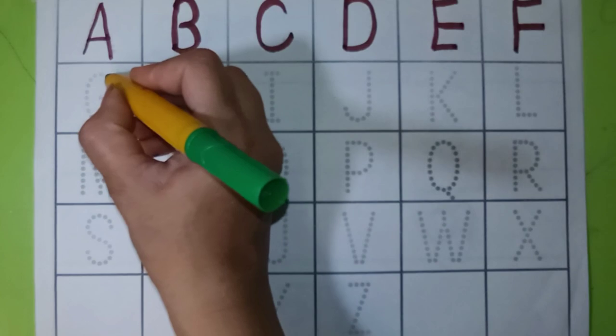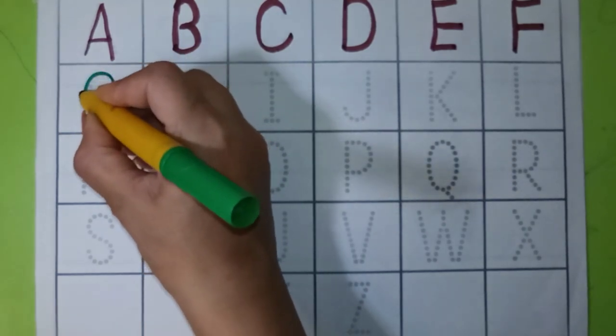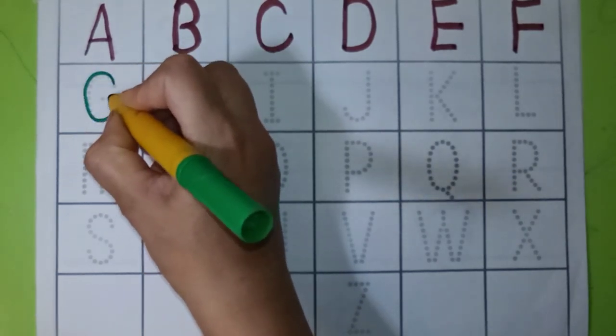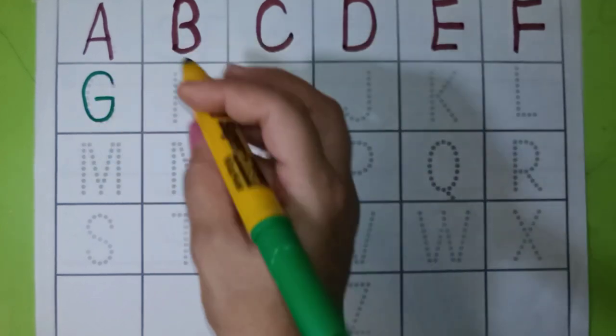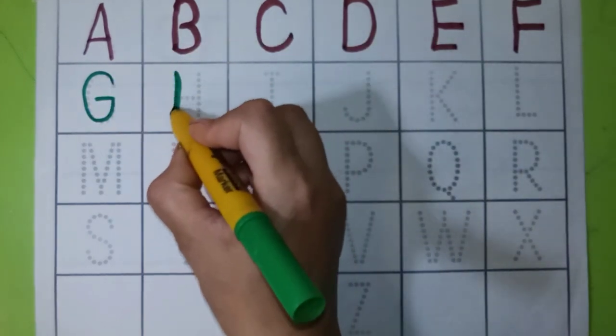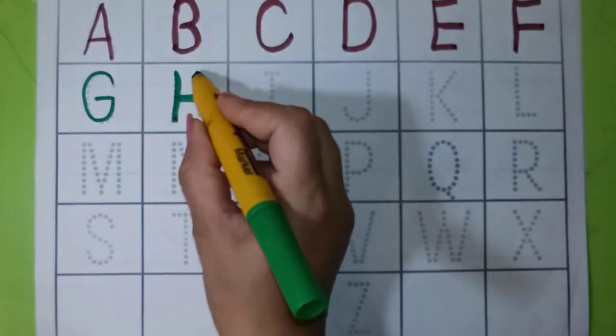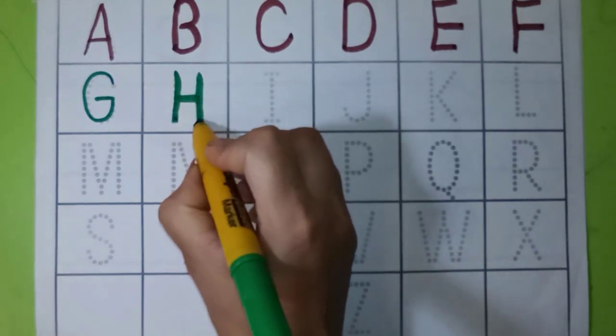Green color. G, G for grapes, G for grapes. H, H for hen, H for hen.